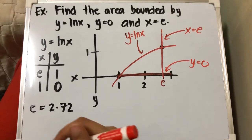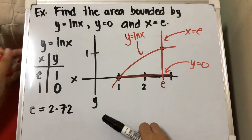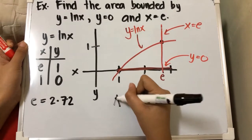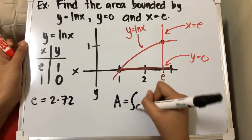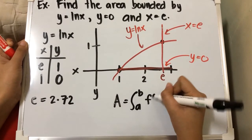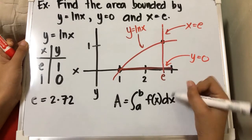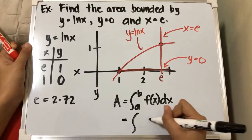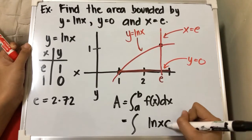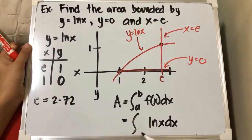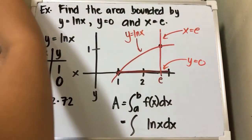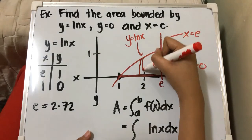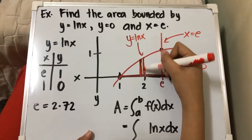Since we are looking for the area, we need to set up the equation. The area is equivalent to the integral from a to b of f(x) dx. Our f(x) here is ln x, so we have the integral of ln x dx.